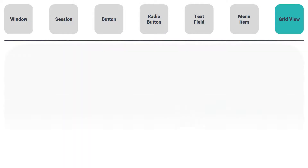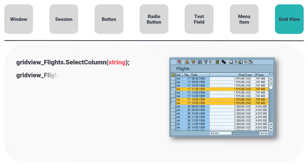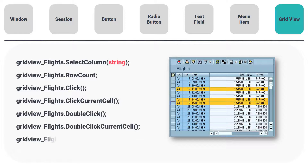The last type is GridView. This has the following functions: SelectColumn, GetRowCount, Click, ClickCurrentCell, DoubleClick, DoubleClickCurrentCell, and GetCellValue.